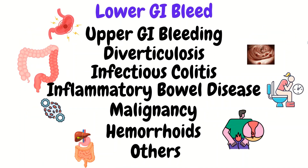Now let's get into the causes of a lower GI bleed. First, an upper GI bleed can actually be a source of a lower GI bleed, as the blood from the upper bleed will end up being expelled and confused for a lower GI bleed. Know that if an upper GI bleed is very rapid and brisk, the blood can actually make it all the way down and still look very bright red. Although we know that most of the time when the bleeding is small, by the time it reaches the bottom it will look black as a result of digestion — so just be aware of that color.